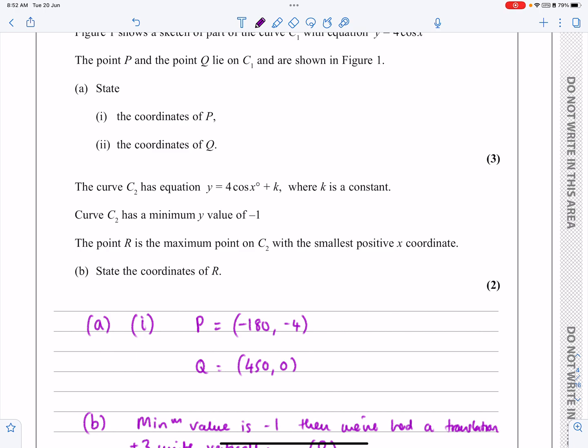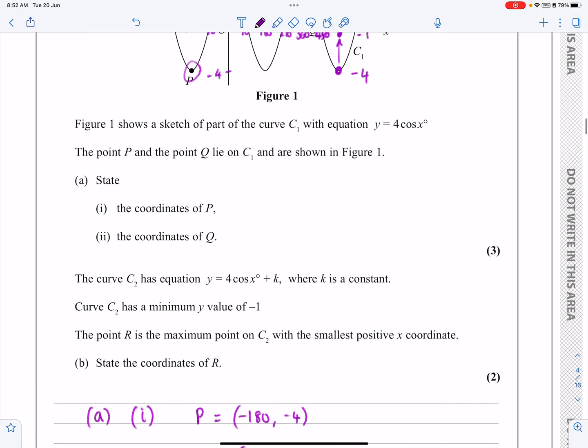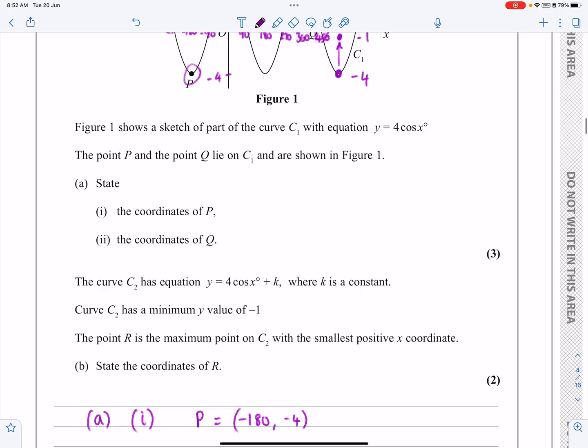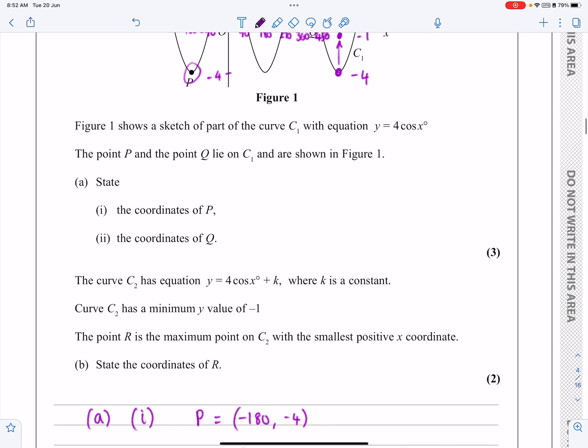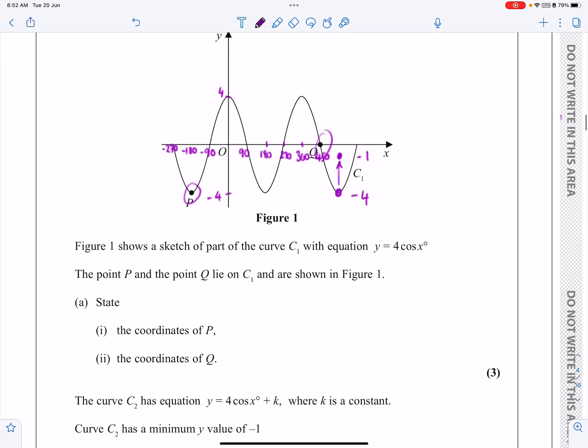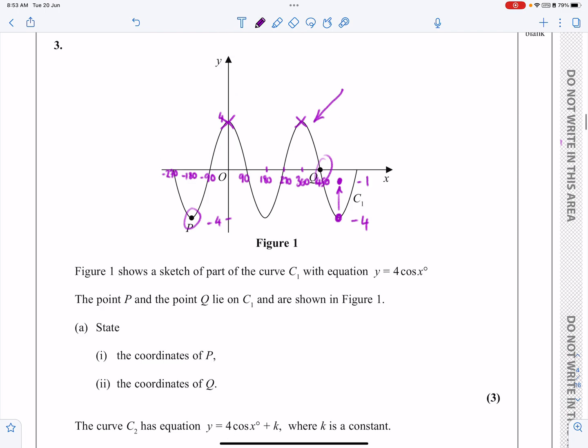What are they asking me? They're now saying R is the maximum point on C2 with the smallest positive coordinates. So it's the maximum point on C2 could be that one, or could be that one, but with the smallest positive x coordinate. So it's going to be that one that I'm looking at.